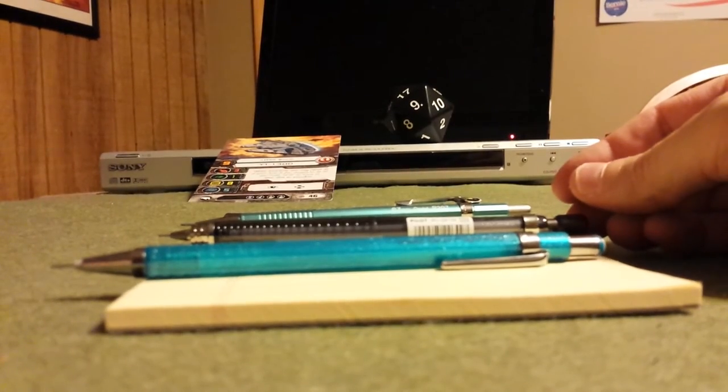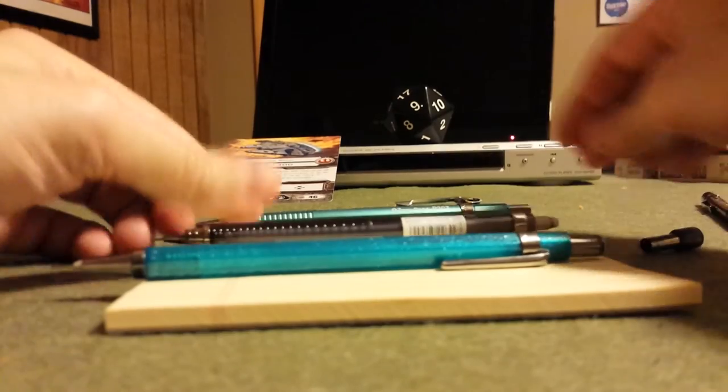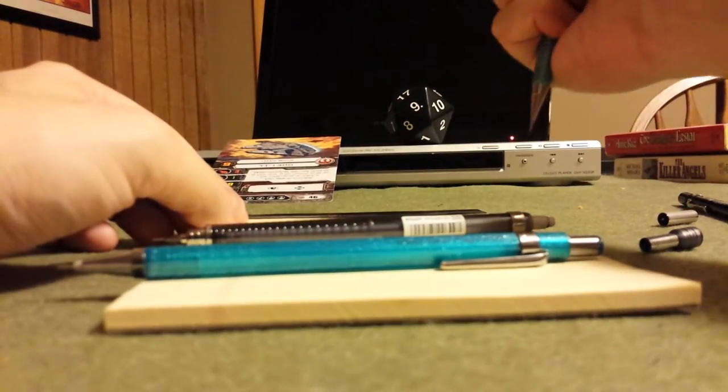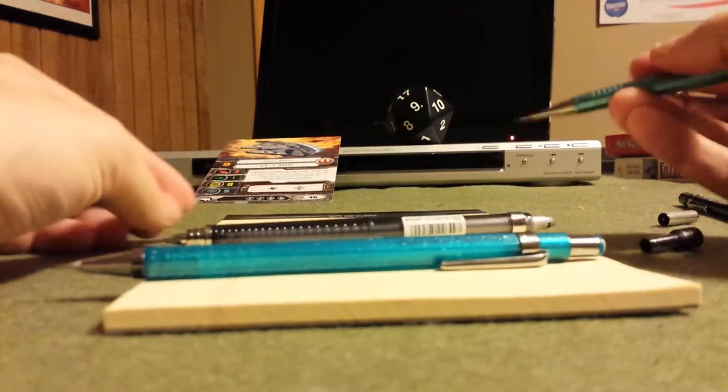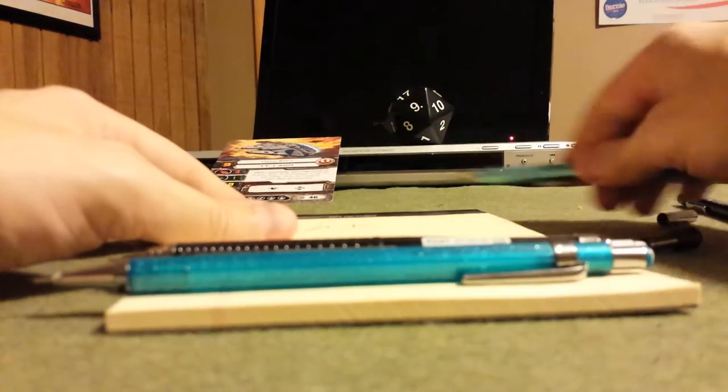A big thing for me when I'm erasing with mechanical pencils is that I don't want to feel a lot of wobble in the lead sleeve. If we just do a little bit of scribbling with the P200 series and then erase, not a lot of wobbling.